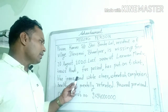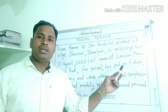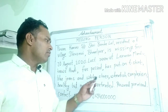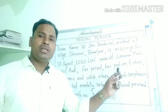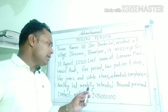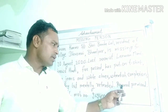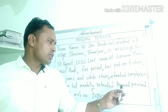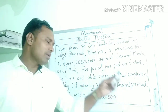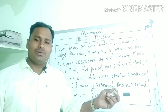वो Hindi जानता है, 5th class pass है। उसने blue T-shirt, blue jeans, और white shoes पहन रखे हैं। Wheatish complexion — गेहुआ रंग है, healthy — स्वस्थ है, but mentally retarded — मानसिक रूप से विकलांग है। Reward promised — बताने वाले को पुरस्कार दिया जाएगा। Contact: mobile number 9694-000000 (काल्पनिक)।